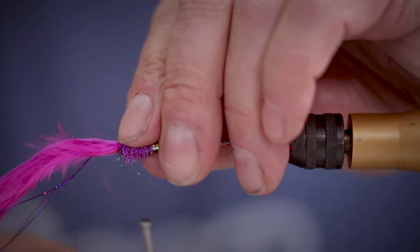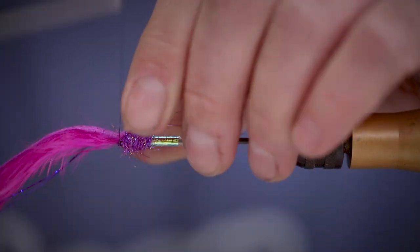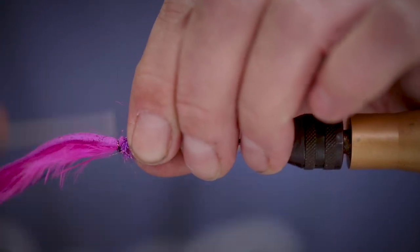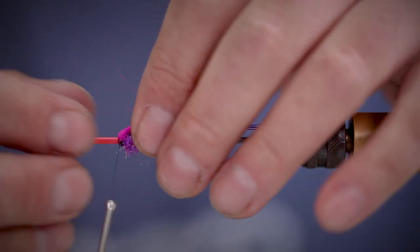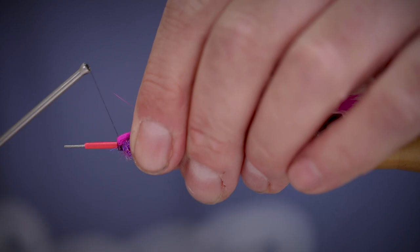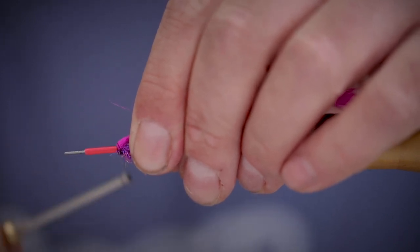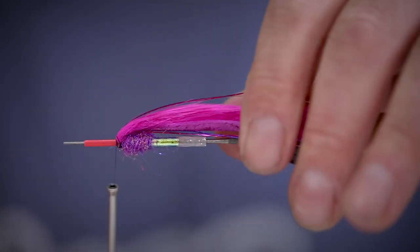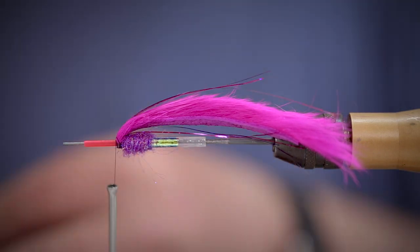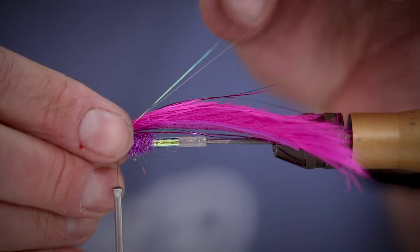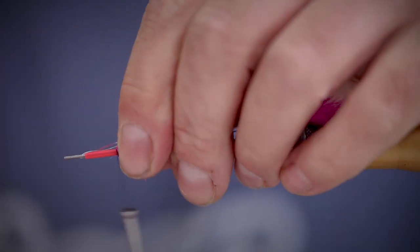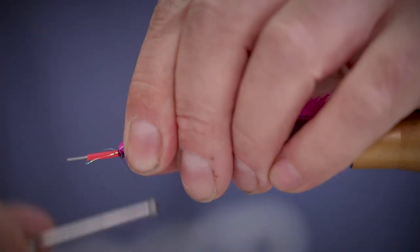We're just going to tie in the zonka wing on the end of the skin upside down so that we can fold it back so that it's super secure. Just catching in the very edge before adding in a couple of strands of pearl flash.